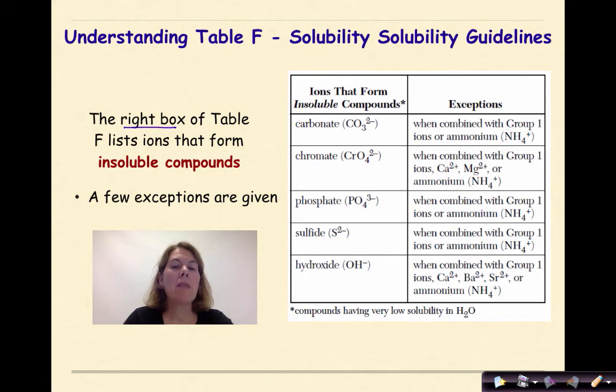Let's talk about the right box of table F. This box lists ions that form insoluble compounds. In other words, they will stay as a solid. They will not dissolve in water. The other term that we use for this is that it will stay as a precipitate. Or, if these two compounds come together in a double replacement reaction, and you form one of these compounds in an aqueous solution, it will precipitate out. It will form a solid.